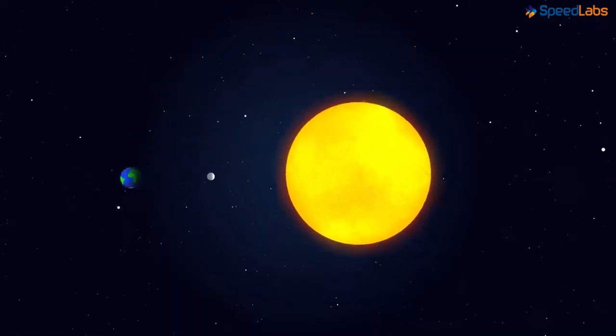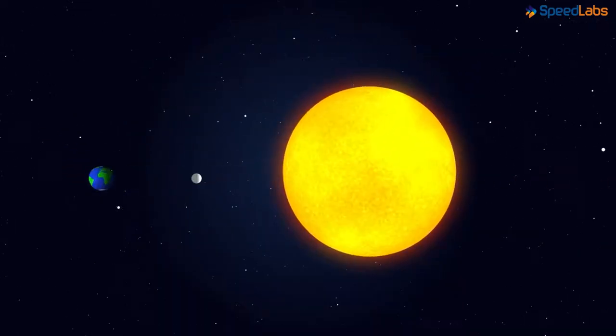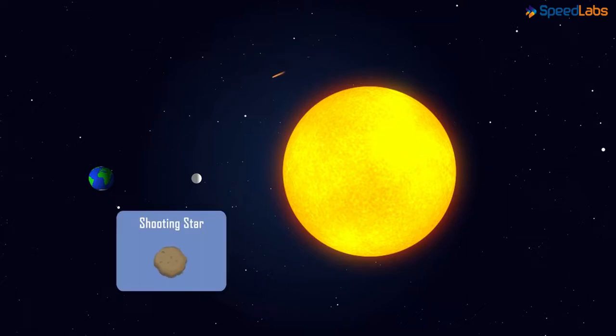Remember when we talked about the new moon phase where we cannot see the moon at all? Well, in this time of the clear sky, you can get a view of some streaks of light. We call these shooting stars even though they are actually rocky in appearance and not actually stars.